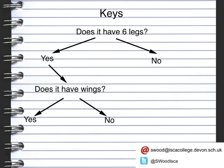If the answer is yes, it could be a butterfly. If the answer is no, it could be an ant. So we've now been able to follow this key and identify two different organisms. Now we're going to follow the no side of the initial question — does it have six legs? And the answer is no.